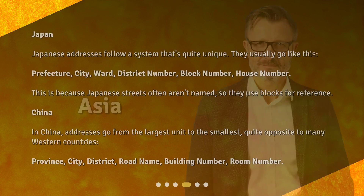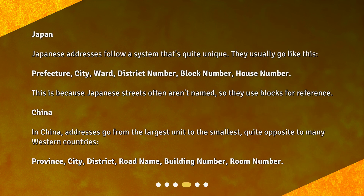Asia. Japan. Japanese addresses follow a system that's quite unique. They usually go like this: prefecture, city, ward, district number, block number, house number. This is because Japanese streets often aren't named, so they use blocks for reference.